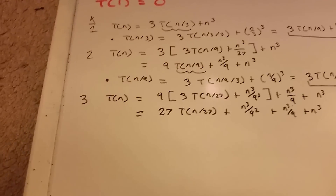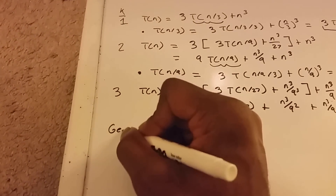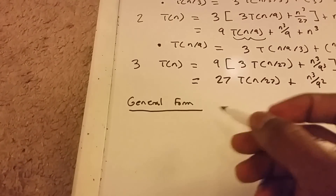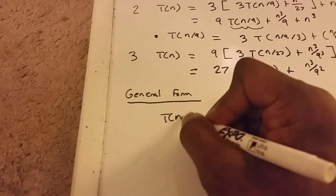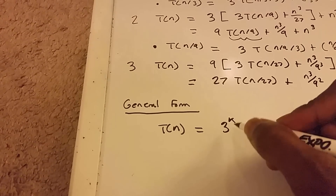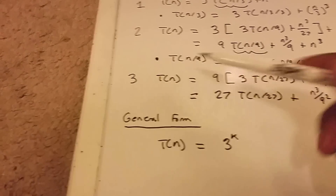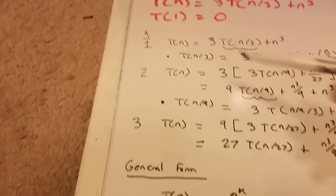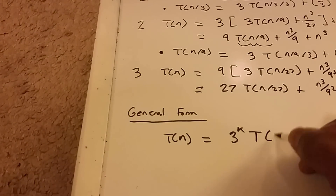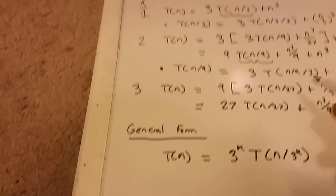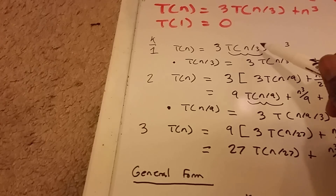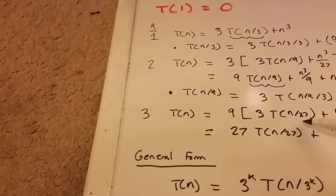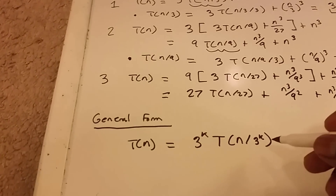Now I can see a pattern, so I'll write out the general form for k. T of n equals 3 to the power of k — because when k is 3 we have 27, when k is 2 we have 9, and when k is 1 we have 3 — times T of n divided by 3 to the k. Same pattern holds for the denominator.